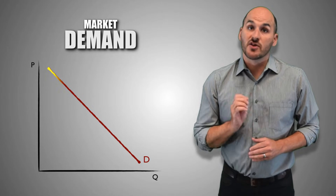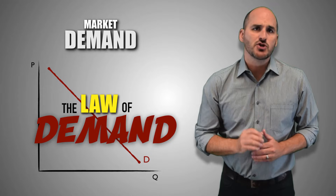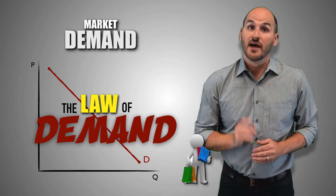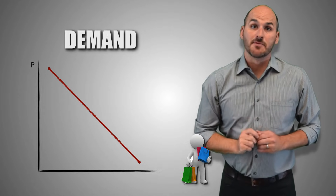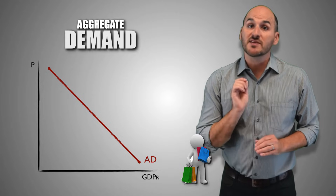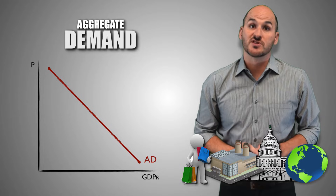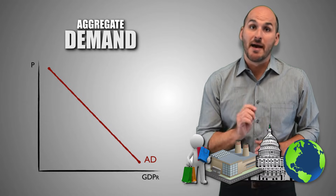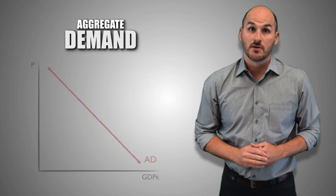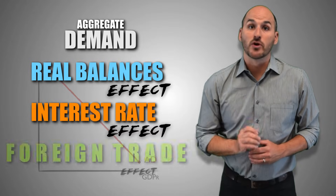In microeconomics, the demand curve is downward sloping because the law of demand is in effect. It focuses on individual consumers and their tendency to buy greater quantities at lower prices, and vice versa. However, aggregate demand involves more than just consumers in the aggregate economy. And so we must consider the factors that affect the purchasing behaviors of firms, government, and foreign consumers as well. In macroeconomics, there are three factors that cause the aggregate demand curve to be downward sloping: the real balances effect, the interest rate effect, and the foreign trade effect.